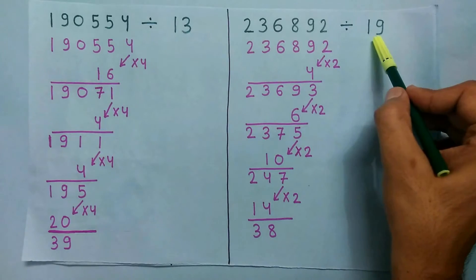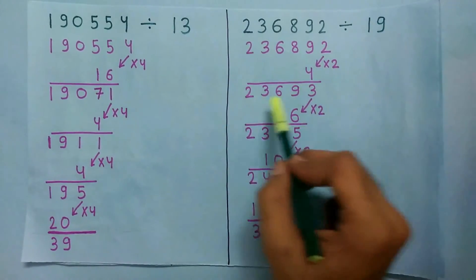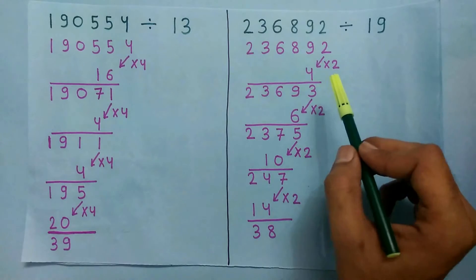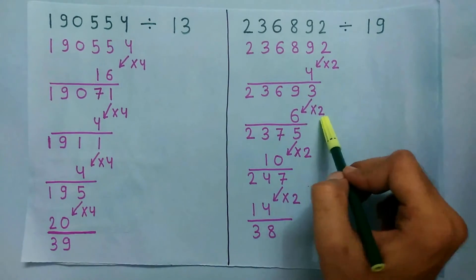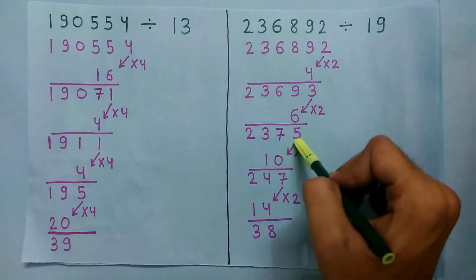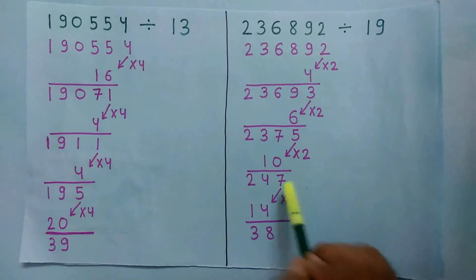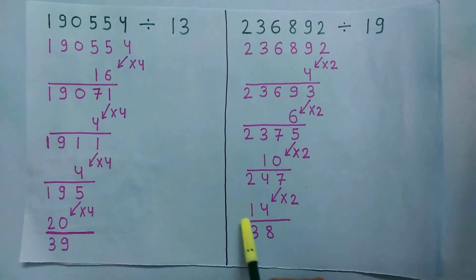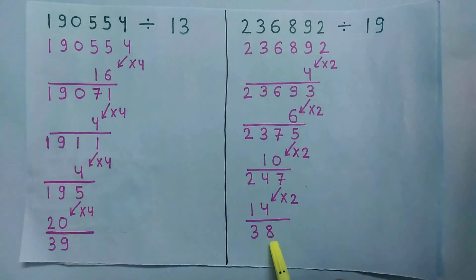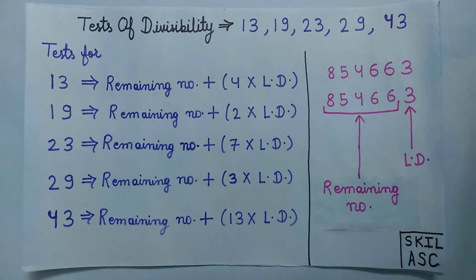To better understand this, let's take an example. To check if this number is divisible by 19 or not, multiply the last digit by 2 and we get 4. Now add this 4 to the remaining number and we get this number. This number is again large, so we repeat the process. Multiply the last digit by 2 and we get 6, add to the remaining number. Then multiply by 2 and get 10, add to remaining. Then multiply by 2 and get 14, add to remaining number 24 and we get 38. Now 38 is divisible by 19, so this number is also divisible by 19.